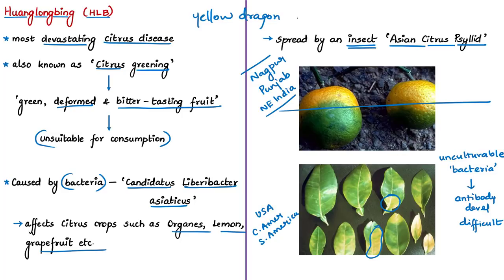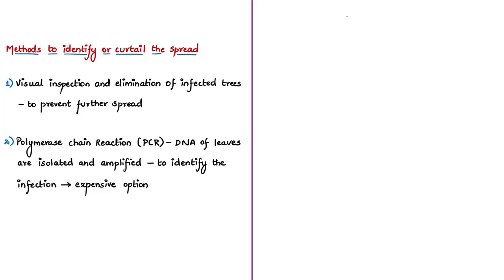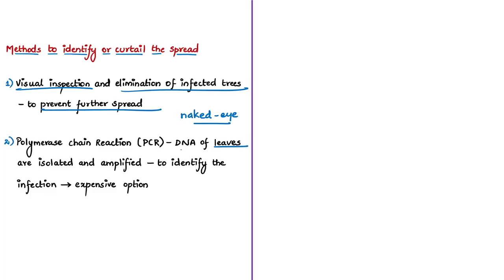At present, the main way of curtailing the spread of citrus greening is first carrying out visual inspection and then eliminating trees with the disease as quickly as possible to prevent further spread. Early detection of citrus greening is very important because infected trees become a source to spread the disease months before showing symptoms detectable by the naked eye. There is another method — expensive and costly — where infected yellow leaf samples are collected, DNA is isolated, and then amplified through a molecular biological technique called polymerase chain reaction. This method can identify the infection at an early stage, but it is an expensive option.